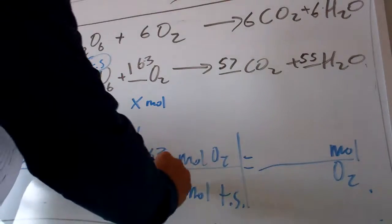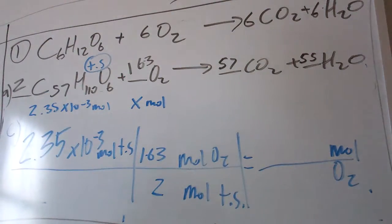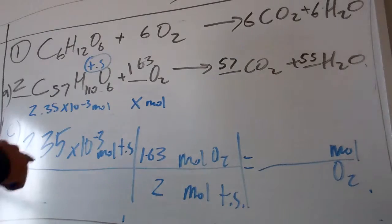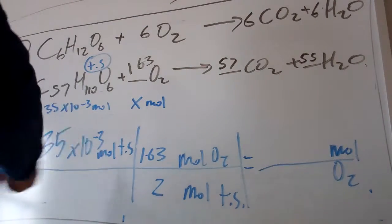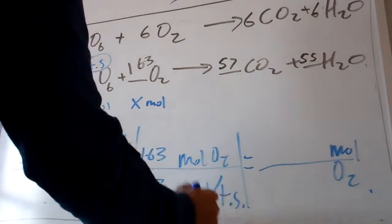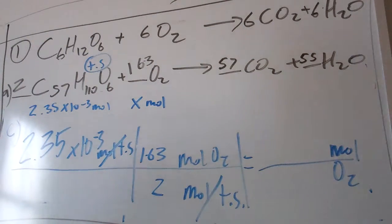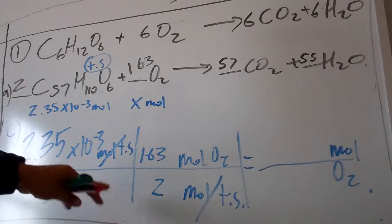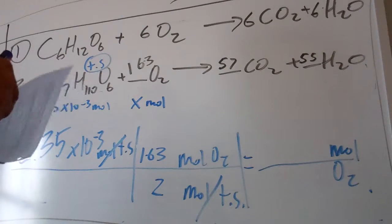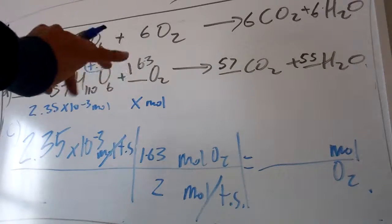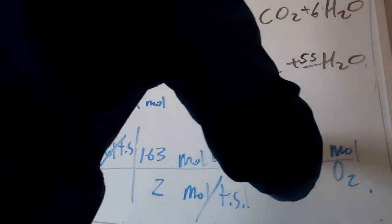Now it's a straight-up math problem: this times this divided by this. This is the conversion factor—it changes from moles of tristerine to moles of O2. And really it's just step two of using a ratio. So, 2.35 times 10 to the negative 3, put it in your calculator...